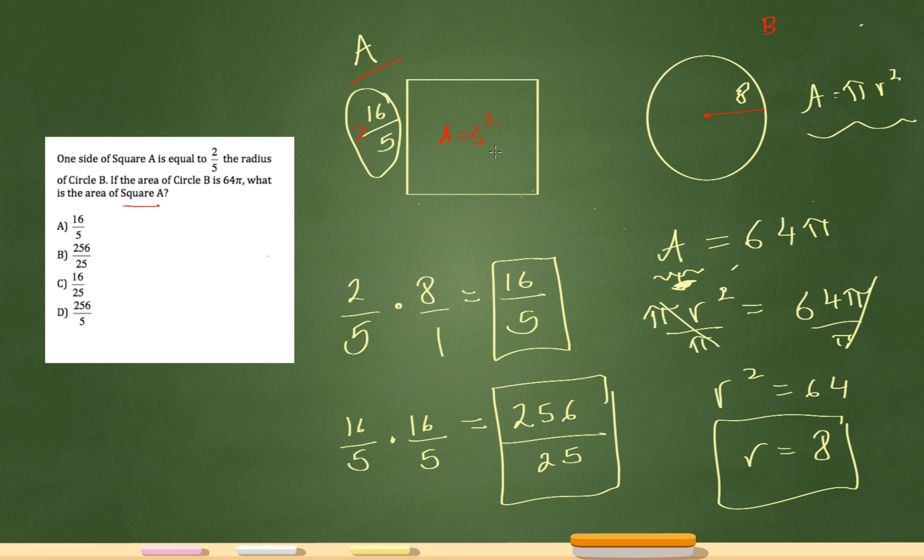Now, in order to figure out the area of the square, you just have to square the side. So 16 over 5 squared is just 16 over 5 times 16 over 5. And which is what I have over here is the final answer. 16 times 16 is 256. 5 times 5 is 25. So 256 over 25 is my final answer.